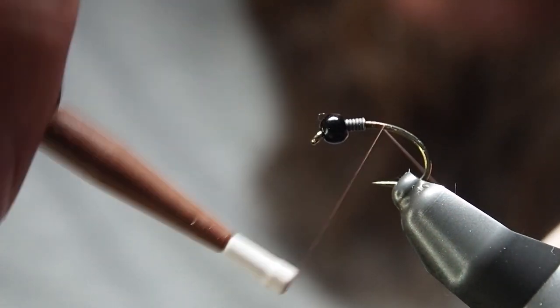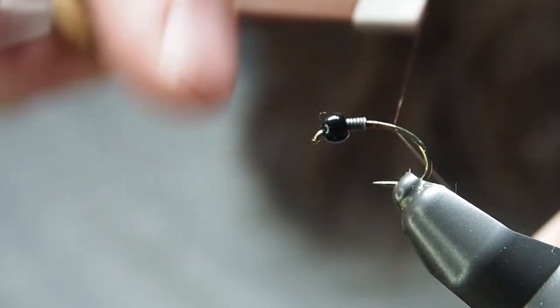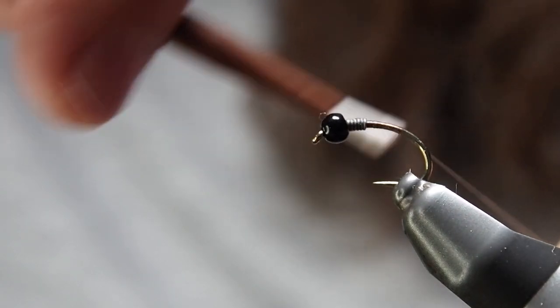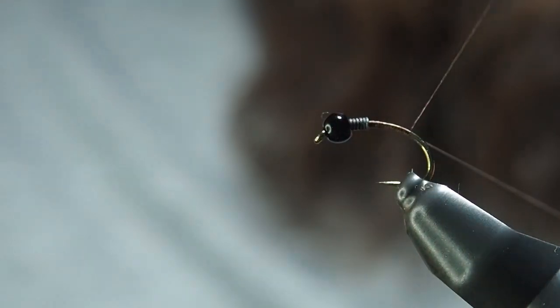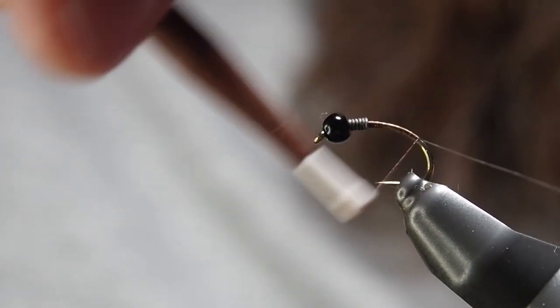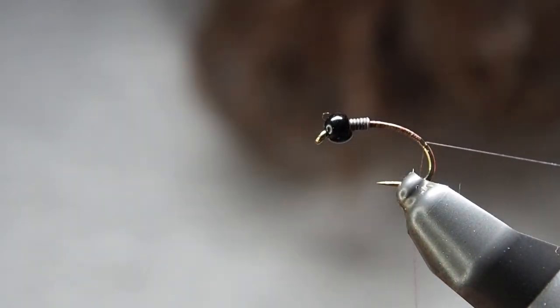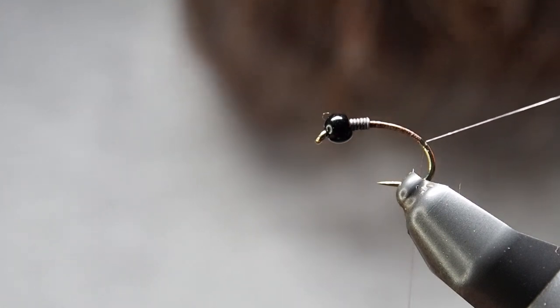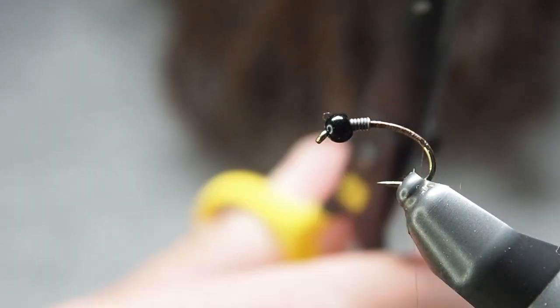We work our way down the hook shank. In this case I'm using a Kamasan B110, which is a nice curved hook in size 10. I'll tie them down to a size 14 or 12 and have a range of weights as well. Once you've got it down, just get rid of the tag end.